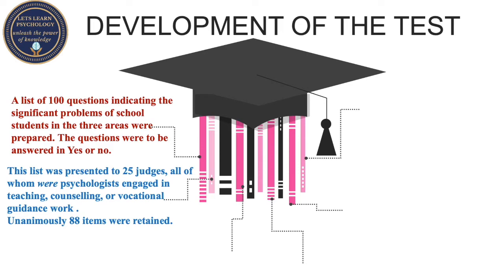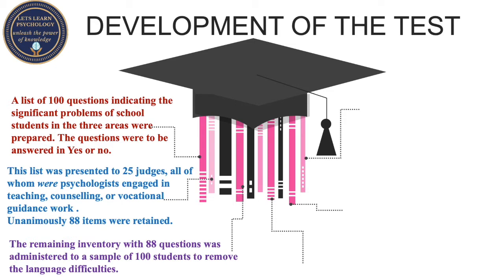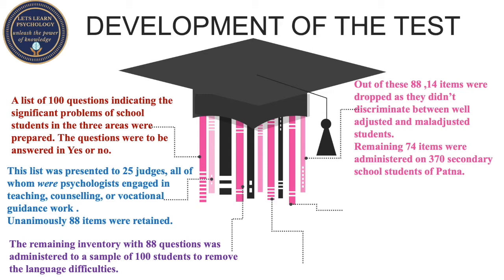These questions were then presented to 25 judges, all of whom were psychologists engaged in teaching, counseling, or vocational guidance work. Unanimously they retained 88 items. These 88 questions were administered to a sample of 100 school students to remove any language difficulties. Out of these 88, 14 items were dropped as they didn't discriminate between well-adjusted and not-so-well-adjusted students.